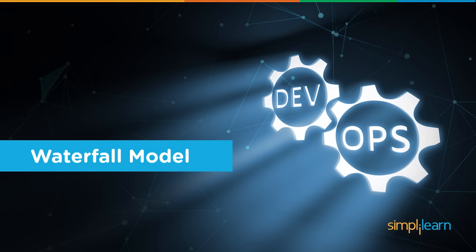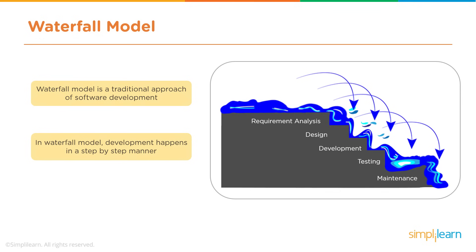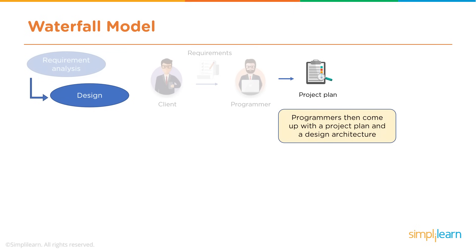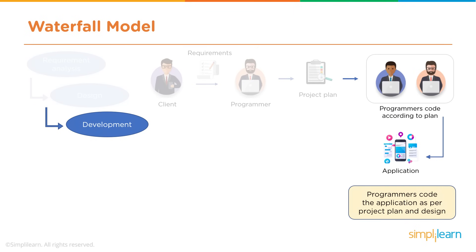Waterfall is a traditional delivery model that's been used for many decades for delivering solutions — not just IT and digital solutions, but going back to World War II. It's a model used to capture requirements and then cascade each key deliverable through a series of stage gates. The first stage is requirements analysis, where you sit down with the client to understand what they need from the software you're going to build. From that, you build out a project plan and then programmers start coding.